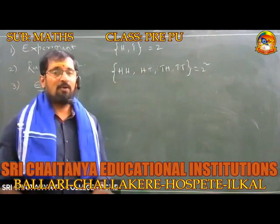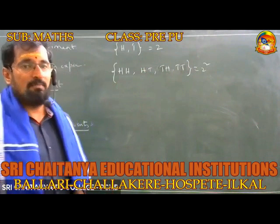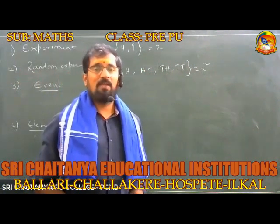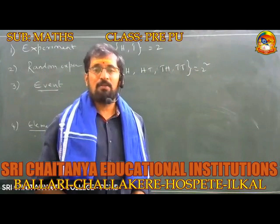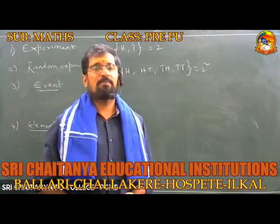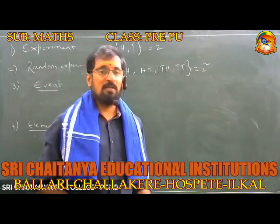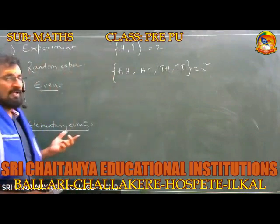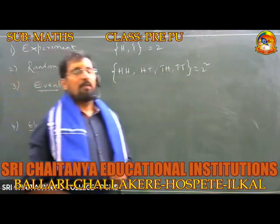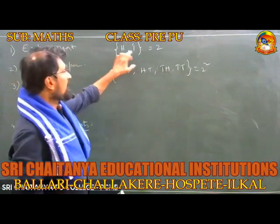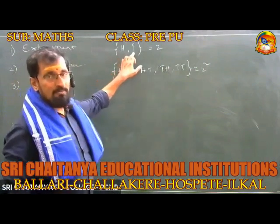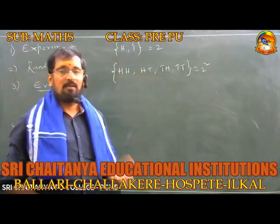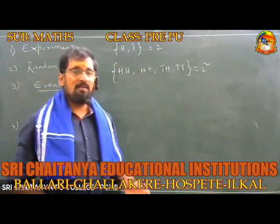If a coin is tossed three times, the number of elementary events equals 2 cubed. If a coin has been tossed n times, the number of elementary events is 2 to the power n. I am repeating the definition of elementary events: the total number of outcomes in the random experiment are called elementary events.